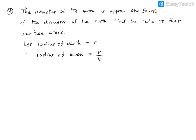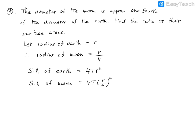We can now calculate the ratio of the two surface areas. Because both the earth and the moon are in the shape of a sphere, the surface area of the earth is 4πr². The surface area of the moon is 4π times (r/4)², since the radius of the moon is r over 4. We need to find the ratio of these two surface areas.